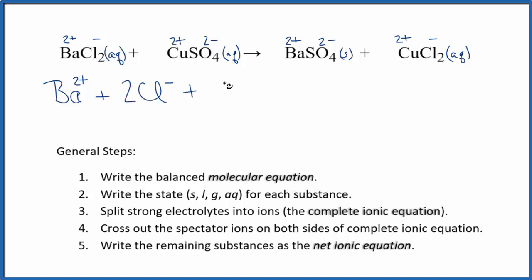We have the copper ion, the copper two ion, Cu2+. And then we have that sulfate ion, SO4 2-. So these are the reactants in our net ionic equation.